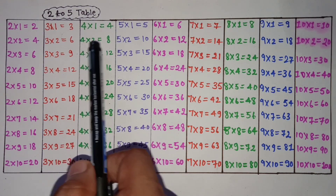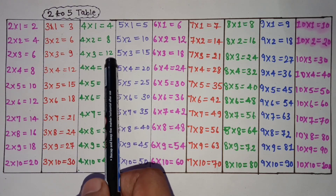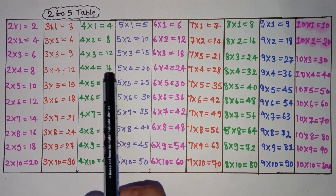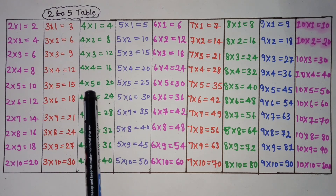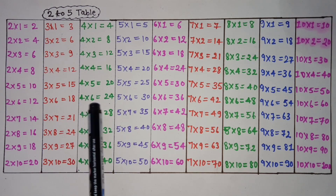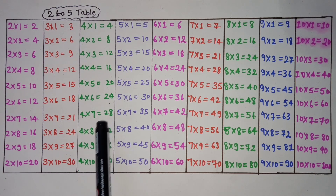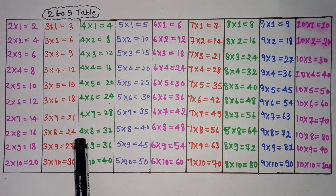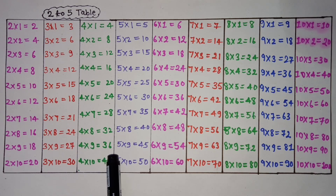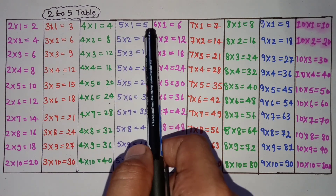4 1 is 4, 4 2 is 8, 4 3 is 12, 4 4 is 16, 4 5 is 20, 4 6 is 24, 4 7 is 28, 4 8 is 32, 4 9 is 36, 4 10 is 40.